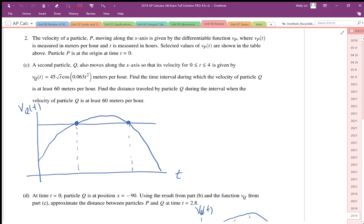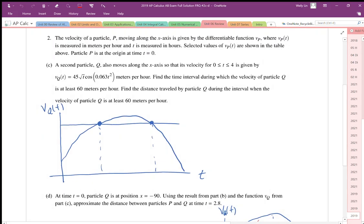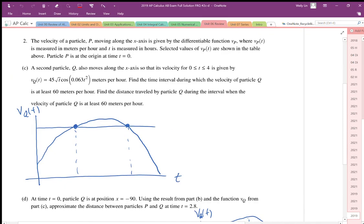A second particle Q moves along the x-axis, so the velocity between 0 and 4 is given by this function: 45 root t cosine of 0.063 t squared, and it's in meters per hour. So again, we're talking about velocity. It says find the time interval which the velocity is at least 60 meters per hour.